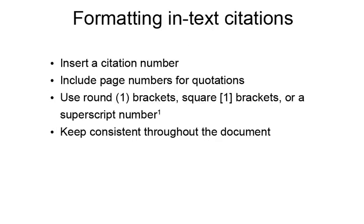For an in-text citation, you will insert a citation number at the end of the phrase or sentence where information from an outside source has been included. This is all you require for paraphrases, but for direct quotations you also need the page numbers. The examples in these materials have been formatted with round brackets, but square brackets or superscript numbers are also acceptable. Just be sure that you select one format and use it all the way through your assignment.